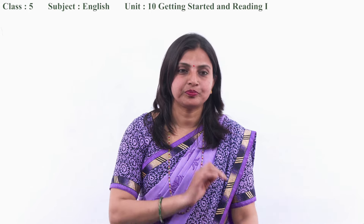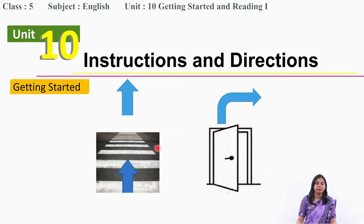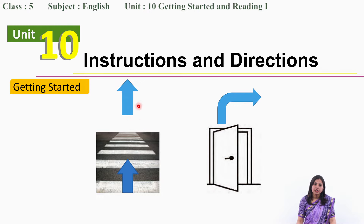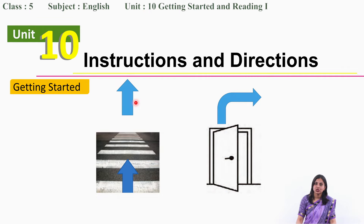Are you ready? Let's start. Can you see those pictures over here? There are some pictures with signs. There is an arrow, and there is a picture of some roads and gates. Tell me, what does this straight arrow mean when it is pointing straight up? You have seen this type of sign on the highway. What does this sign mean? A straight arrow means go straight — don't turn anyway, just move and go straight.